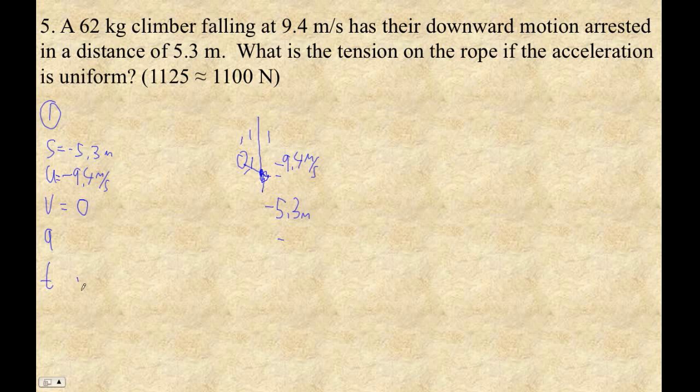I think the thing to use here is V squared is U squared plus 2AS. So zero squared is negative 9.4 squared plus 2 times A, which is what we want to find out, times negative 5.3. And this is, of course, why it's going to be a positive number, because if we stick this on the other side, it's going to be positive, and this will be positive when we square it.